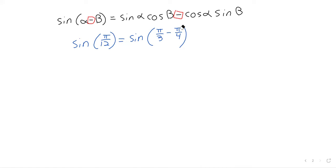After we make that observation, pi/3 is standing in for alpha and pi/4 is standing in for beta, and this becomes plug and chug.